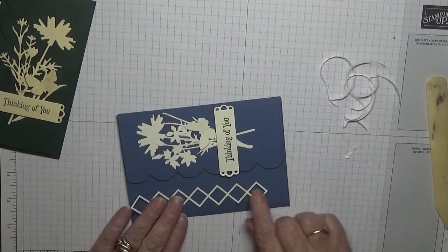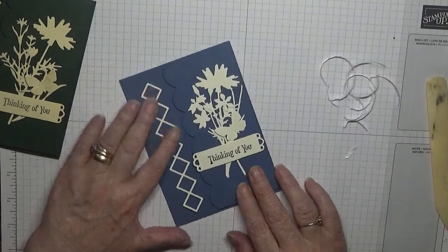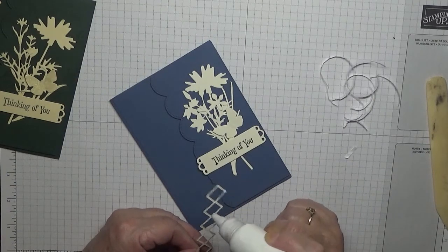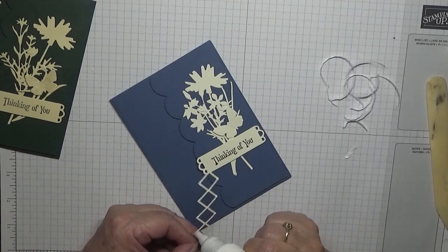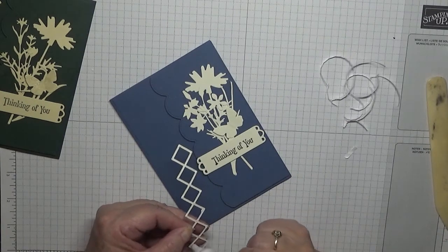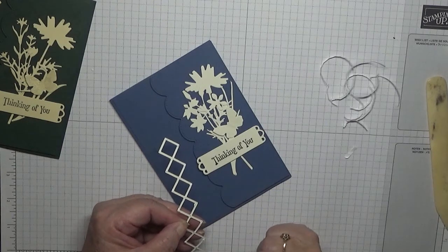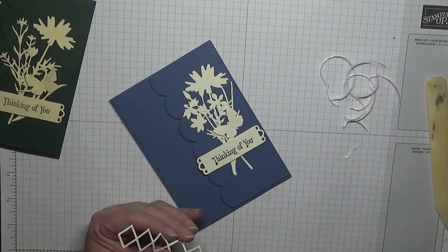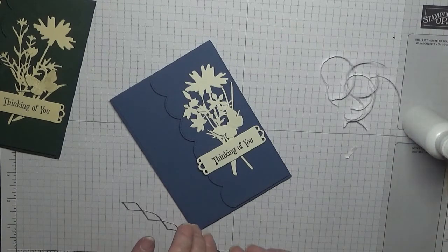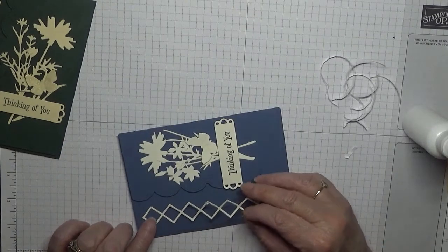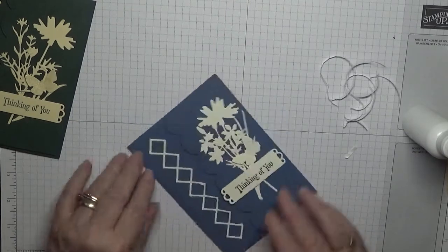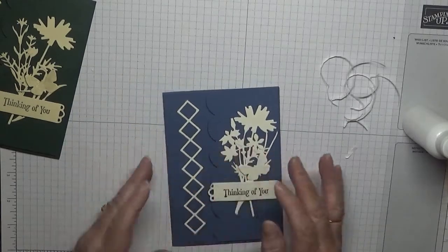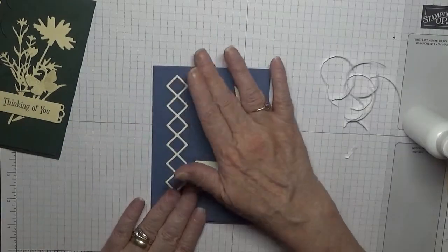Now this bit here we just glue down flat there. So let's pop some glue on it, and just putting some in each corner, the corner I'm holding. And that is our card done.